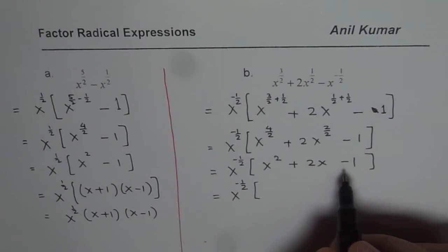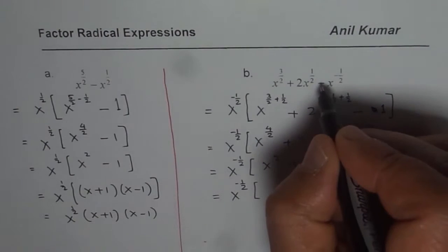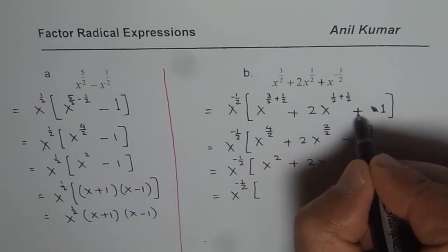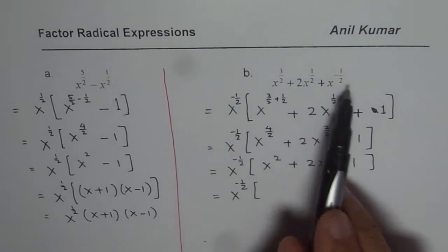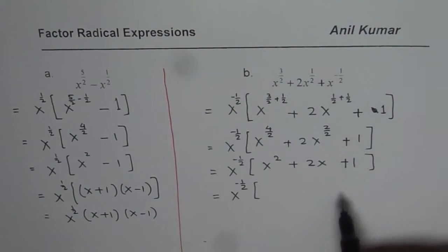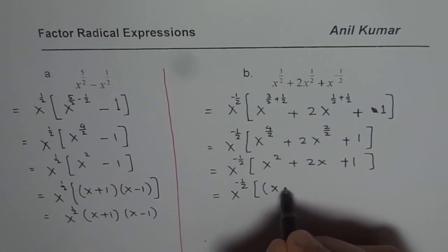Well, that doesn't work. So I will change the question. I think there is a typing error. So I will just make it plus. So I made it plus so that I could factor. The idea is to understand how to work with the radicals. There could be a typing error. So I just made it plus. Now, we are looking for 1 plus 1 is 2 and 1 times 1 is 1. So I hope you don't mind that.